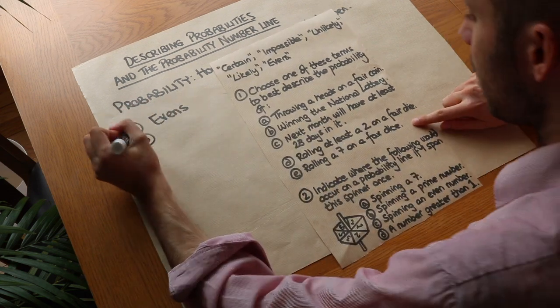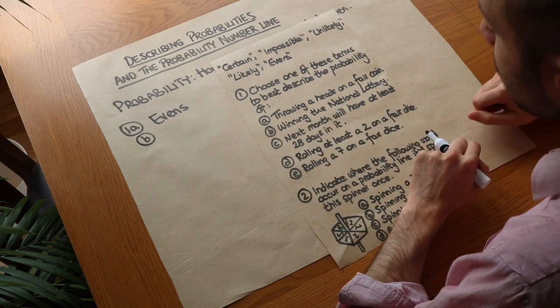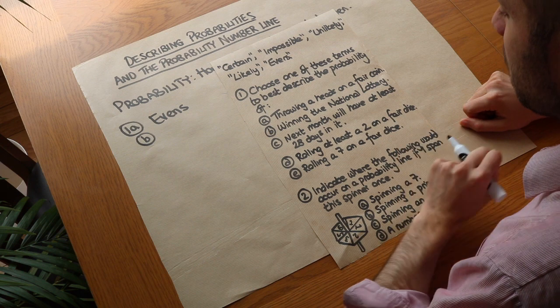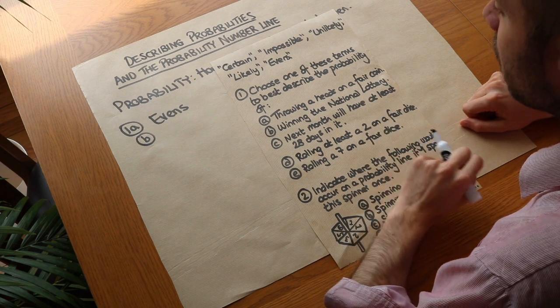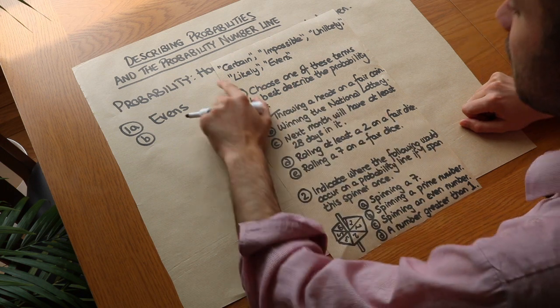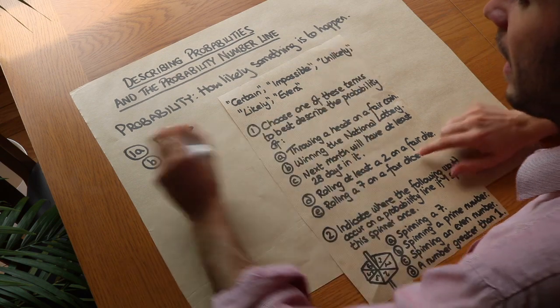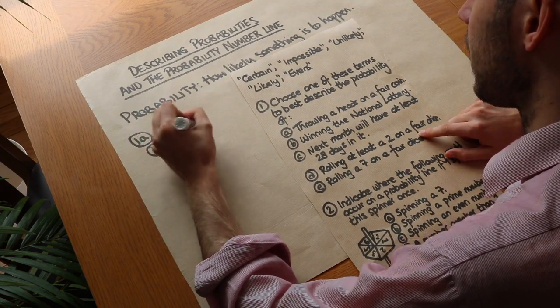What about 1b? The probability of winning the national lottery. Now there is certainly a chance of winning the lottery. But that chance is really, really low. It used to be 1 in 14 million to win the UK national lottery. I think it's even less than that now. So it's not impossible, but it's unlikely. So we'd say this one is unlikely.